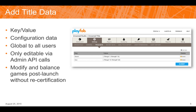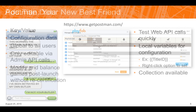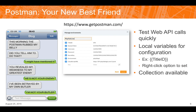Title data can be for the individual title, and there's also the concept of publisher data, which can be shared across all your titles. This is important because the user data can similarly have data for the individual user or for all titles across your studio.